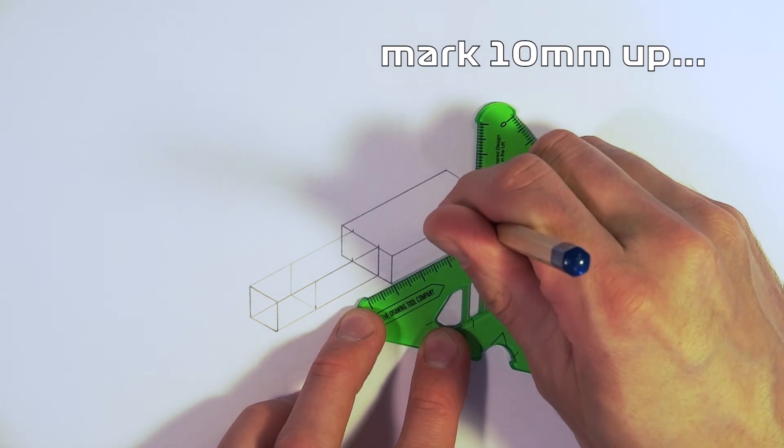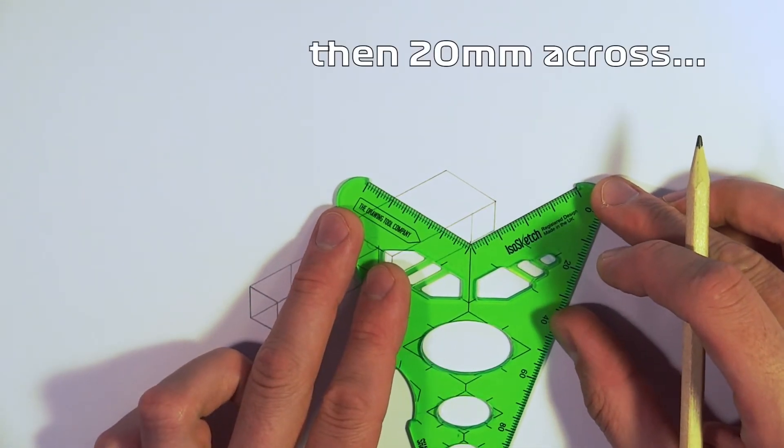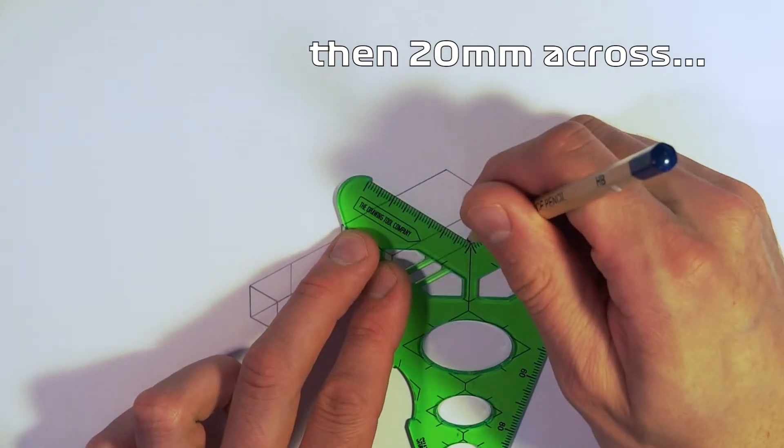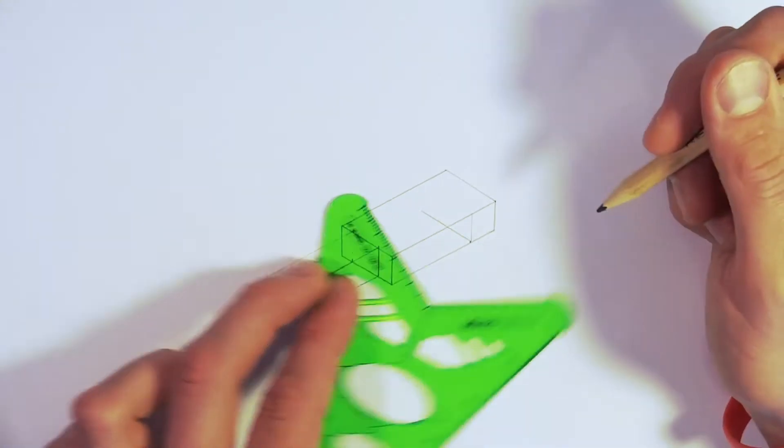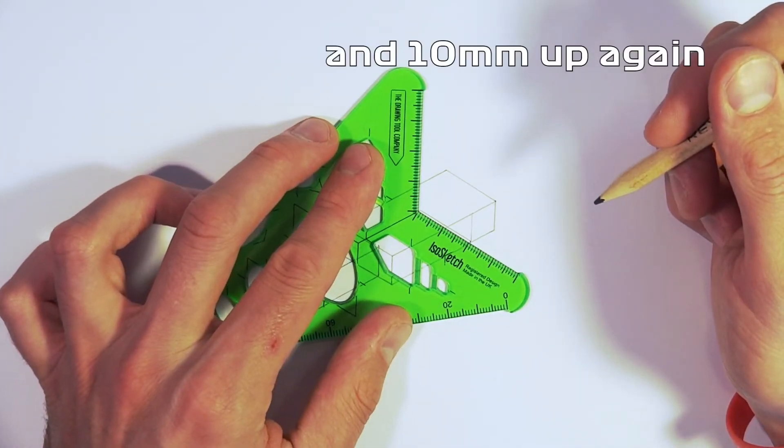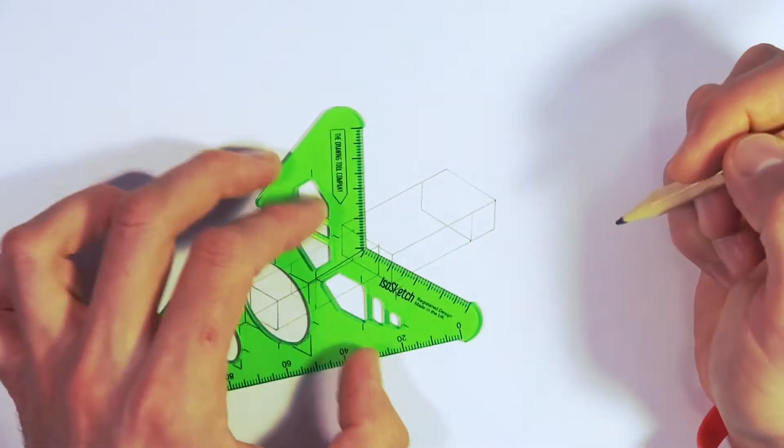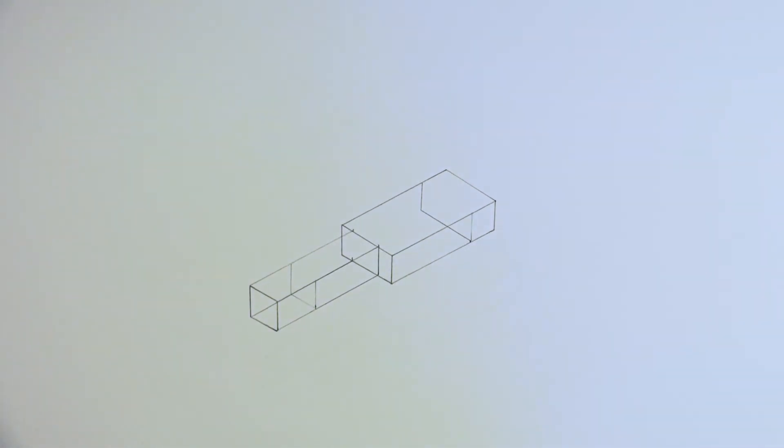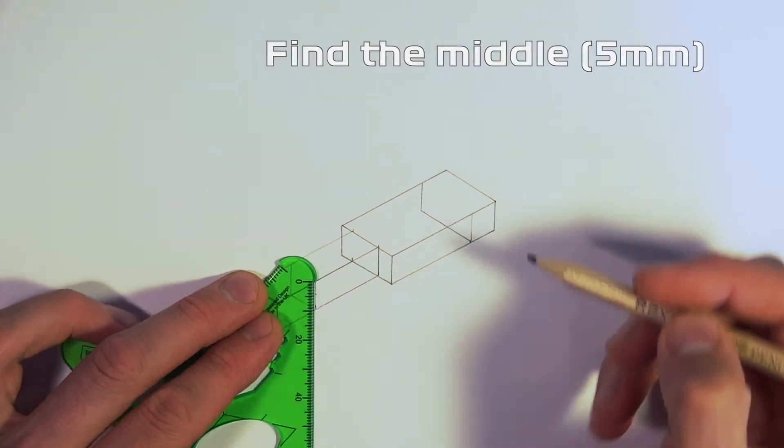And then drawing a line that's 10 millimeters or one centimeter up. Again, move the tool so it's parallel with the shape, and then mark across 20 millimeters. It's important to count these measurements on the ruler as well, don't just guess them. And then finish this off by going 10 millimeters up, and you can see again we've drawn like a slice through our chassis.